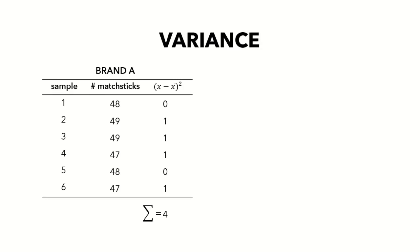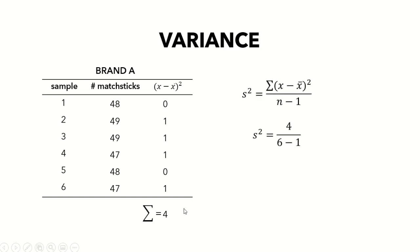Let's find the sample variance of Brand A. The deviations are 48 − 48 = 0, then 1, 1, 1, 0, and 1. Squaring each gives 0, 1, 1, 1, 0, 1. The sum of squares is 4. With n = 6, n − 1 = 5. So s² = 4 / 5 = 0.8.